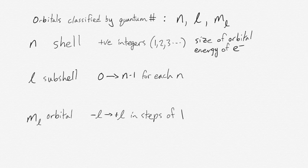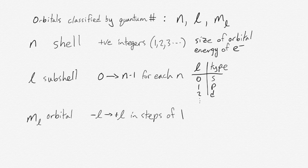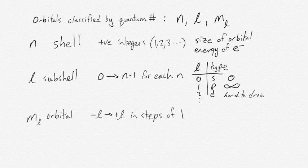l can run from 0 to n-1 for each value of n, which means you can get a whole series of different subshell types. The different values of l correspond to different types of subshells: 0 gives you an s-type subshell, 1 gives you a p-type subshell, and 2 gives you a d-type subshell. Each of these types of subshells have different shapes — s-type orbitals tend to be spherical, p-types are dumbbell-shaped, and d-types are harder to draw.